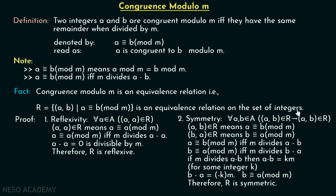We will try to prove this fact — why this relation, the set of all ordered pairs (A, B) such that A is congruent to B modulo M, is an equivalence relation. For this, we have to consider three properties of equivalence relations: reflexivity, symmetry, and transitivity.